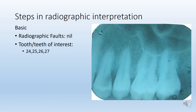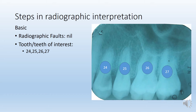Moving on to identifying the faults — in this particular radiograph, I don't really see many faults except for a few scratch marks. Otherwise it looks good enough, and the teeth look in well proportion. The teeth of interest are 2.4, 2.5, 2.6, and 2.7 — that is the first premolar, second premolar, first molar, and second molar.